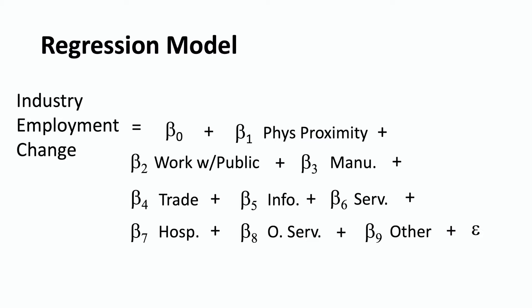So let's start by just going over this conceptual model or regression model that we're going to estimate. This regression model is an idea of how I think the world works. I think that industry employment change over a year's time between April 2019 and 2020 is related to the physical proximity of jobs within an industry. So that first variable is PHYS proximity, which is the percentage of employment in a sector that's in occupations where people have to work really close together or within an arm's length.